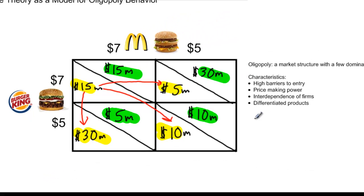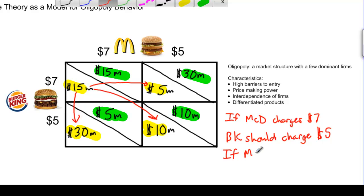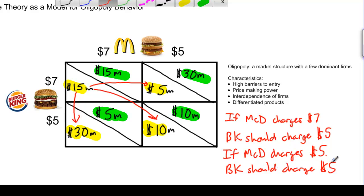So let's go through the options. If McDonald's charges seven dollars, Burger King should charge five dollars — because Burger King's profits will be thirty million dollars instead of fifteen million. If McDonald's charges five dollars, Burger King should still charge five dollars, because by doing so Burger King prevents its profits from falling all the way from fifteen to five million. Instead they only fall from fifteen to ten million. Therefore, Burger King should always charge five dollars.